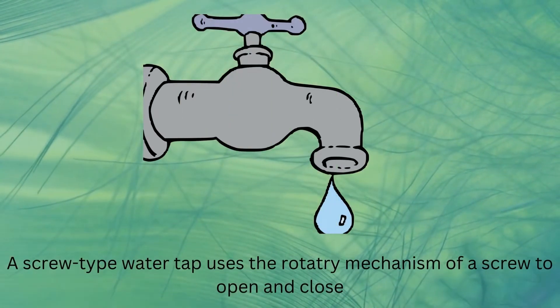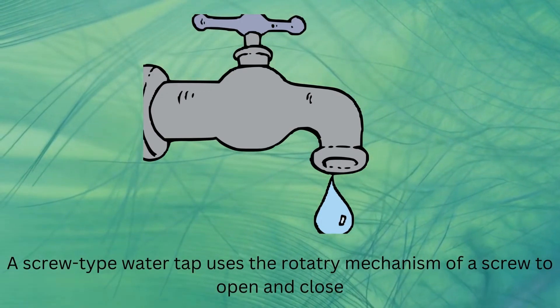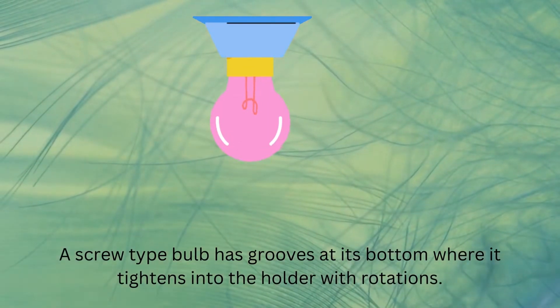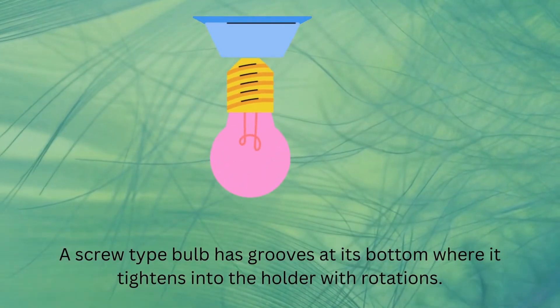A screw type water tap uses the rotatory mechanism of a screw to open and close. A screw type bulb has grooves at its bottom where it tightens into the holder with rotations.